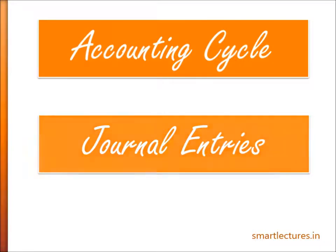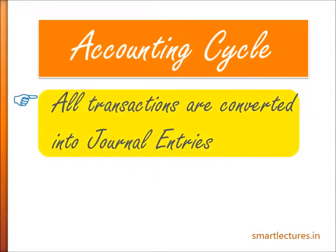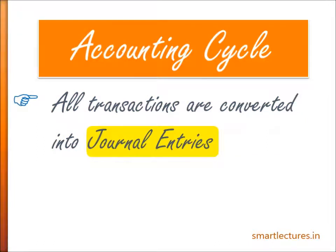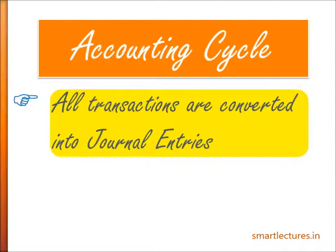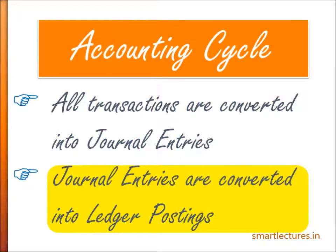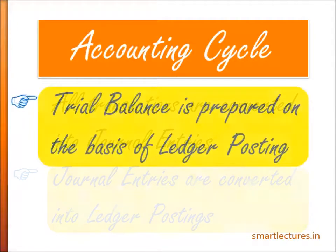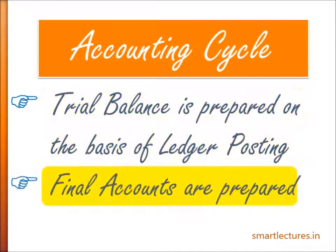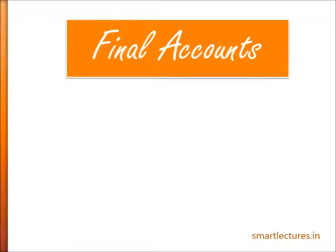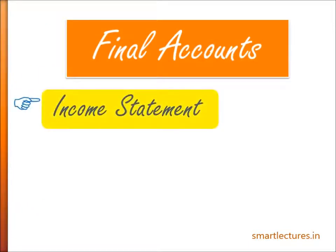First of all, all transactions are converted into journal entries. Journal entries is a new word for you — don't worry, very soon I am going to explain. So coming back to the accounting cycle: all transactions are converted into journal entries, journal entries are converted into ledger posting, on the basis of ledger posting a trial balance is prepared, and on the basis of trial balance, final accounts are prepared. Final accounts contain mainly two statements: income statement and the balance sheet.